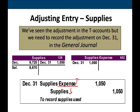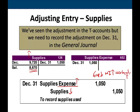If we don't prepare those adjustments for prepaid, assets are overstated — we don't have $9,720, we have $8,670 — and supplies expense is underreported. If expenses are down, net income is up, and equity is up. You don't want to misstate your expenses, your income, your equity, or your supplies balance.